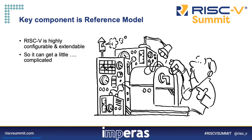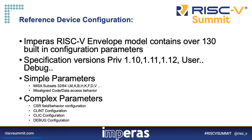A key part of this verification process is to have a reference model that you can use to compare the behavior of your design against when performing testing. Due to the highly configurable nature of RISC-V — in terms of what's defined within the debug, privilege, and user specifications — any model serving as a reference must also incorporate those same capabilities to be either enabled, disabled, or selected from variants to match the same behavior.